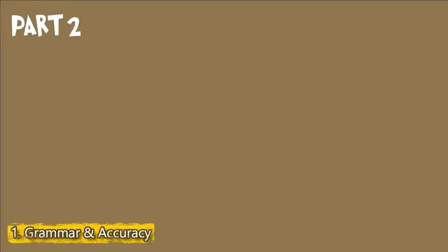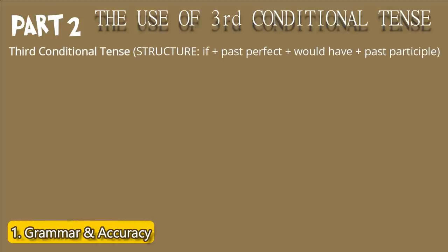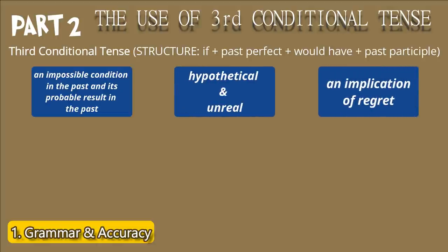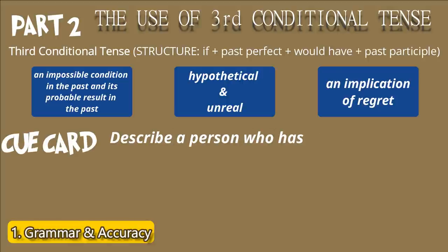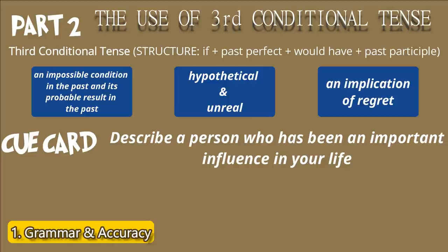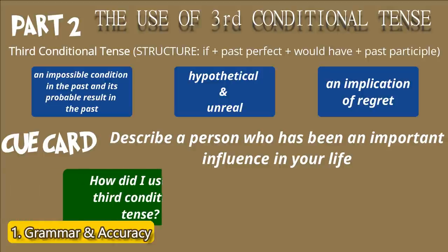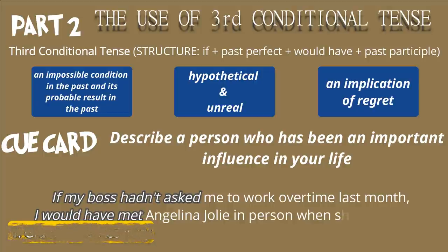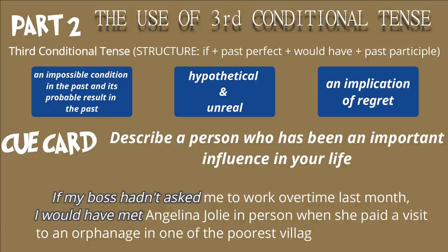In part 2, I used the third conditional tense. We use this when we talk about an impossible condition in the past and its probable result in the past. It's hypothetical and unreal, and there's always an implication of regret. The cue card I got was: 'Describe a person who has been an important influence in your life.' Somewhere in my monologue, I said: 'If my boss hadn't asked me to work overtime last month, I would have met Angelina Jolie in person when she paid a visit to an orphanage in one of the poorest villages in our country.' I was expressing my regret for not seeing Angelina Jolie using an advanced type of grammar, which helped me sound natural and confident. That's a big plus point for the criterion grammar and accuracy.